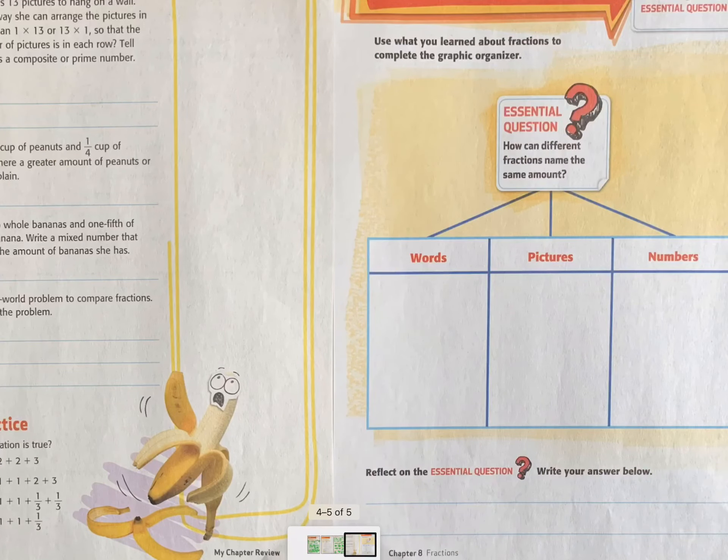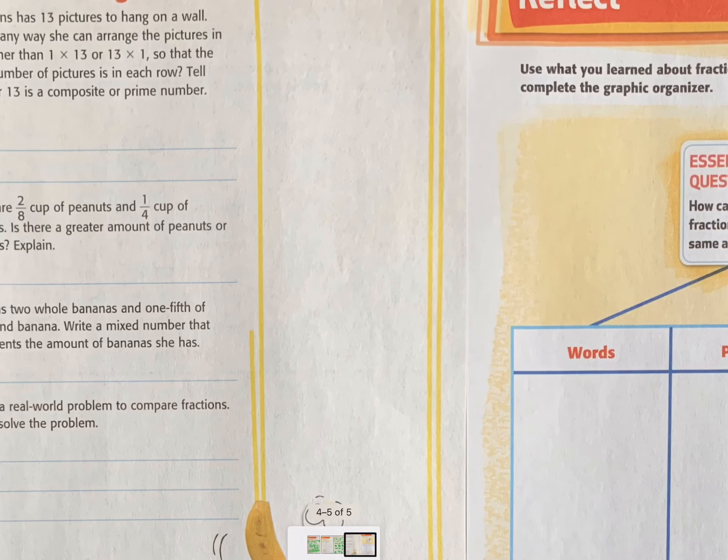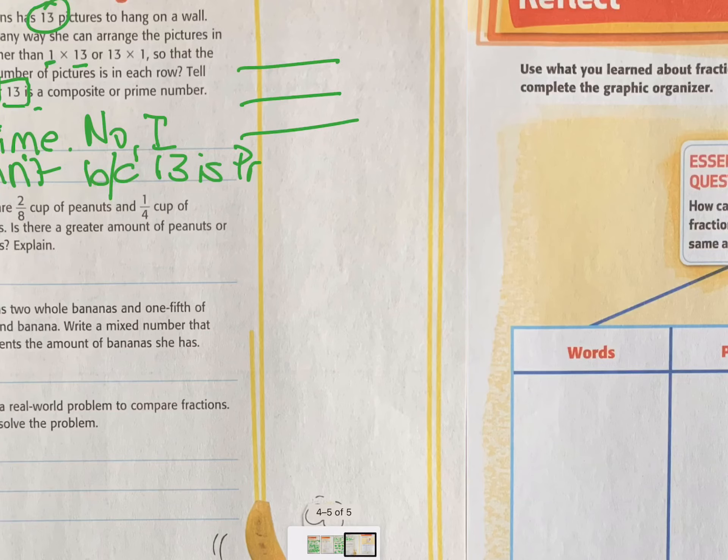Let's move on. Mrs. Evans has 13 pictures to hang on a wall. Is there a way she can arrange the pictures in rows other than 1 times 13 or 13 times 1? So that the same number of pictures are in each row. So same number means equal rows and columns. So it's multiplication, right? Tell whether 13 is composite or prime. Well, can I divide 13 by anything other than 1 and 13? No. It is prime. So the answer is no. I can't. Because 13 is prime.